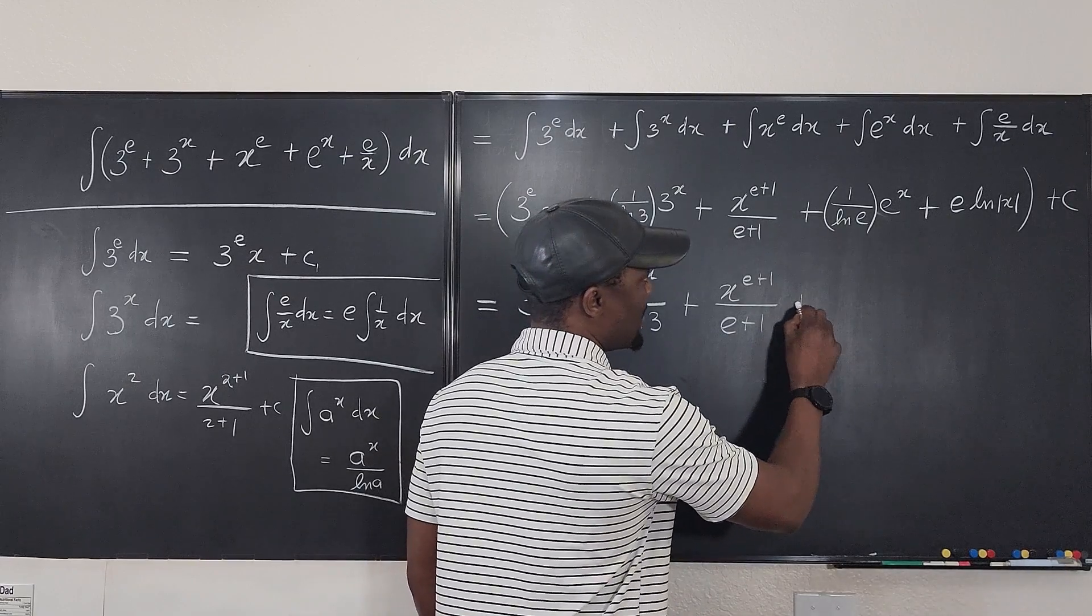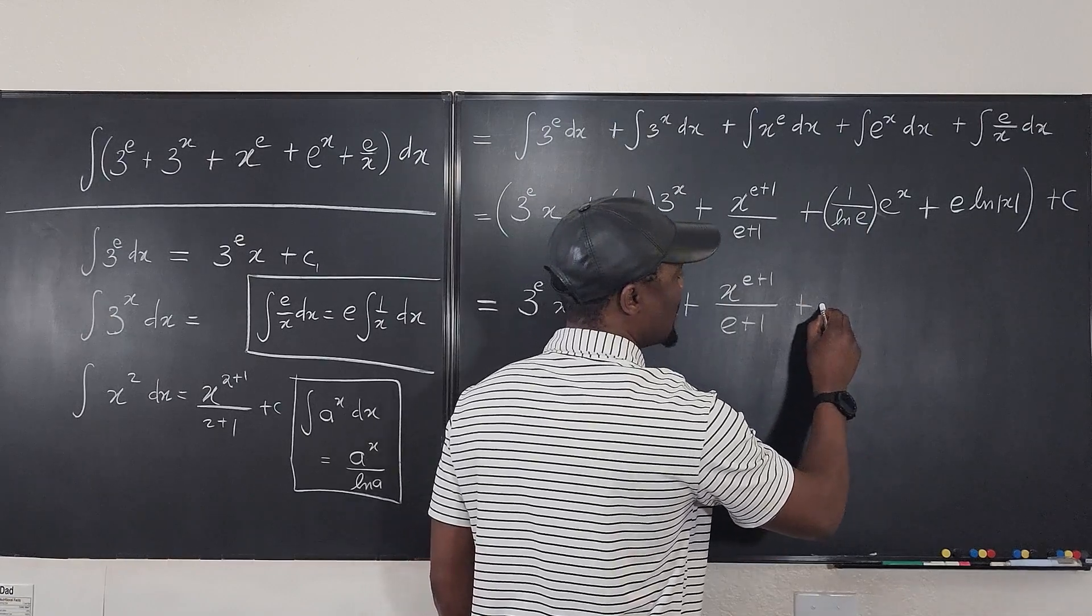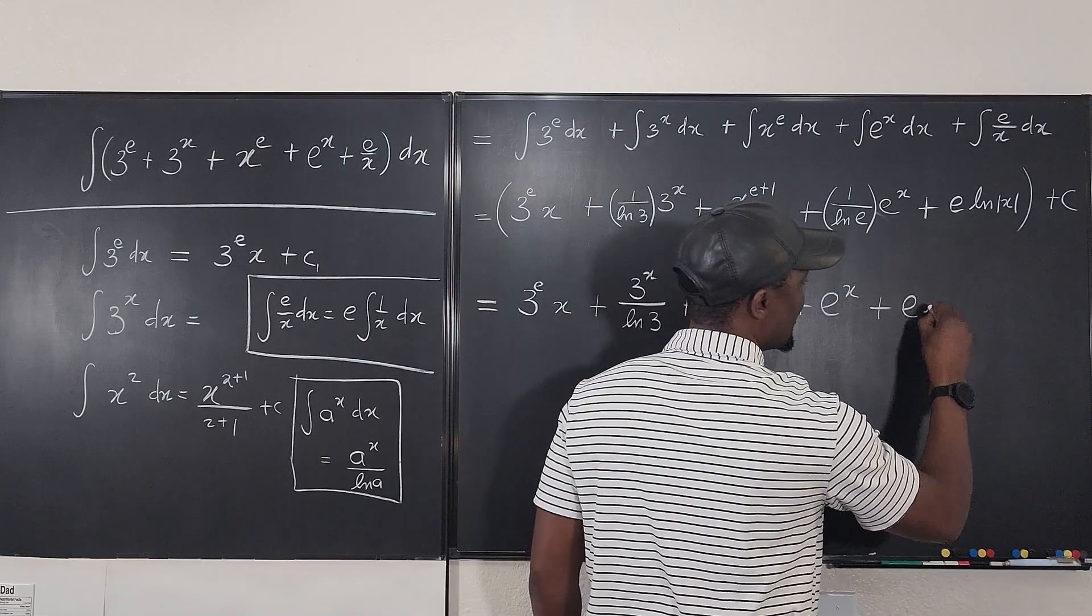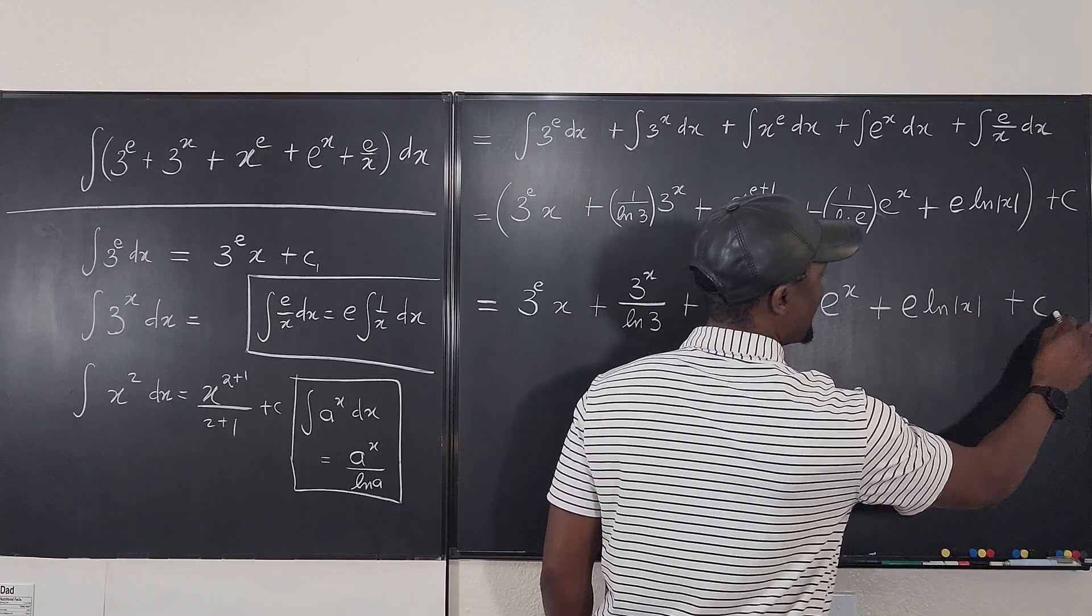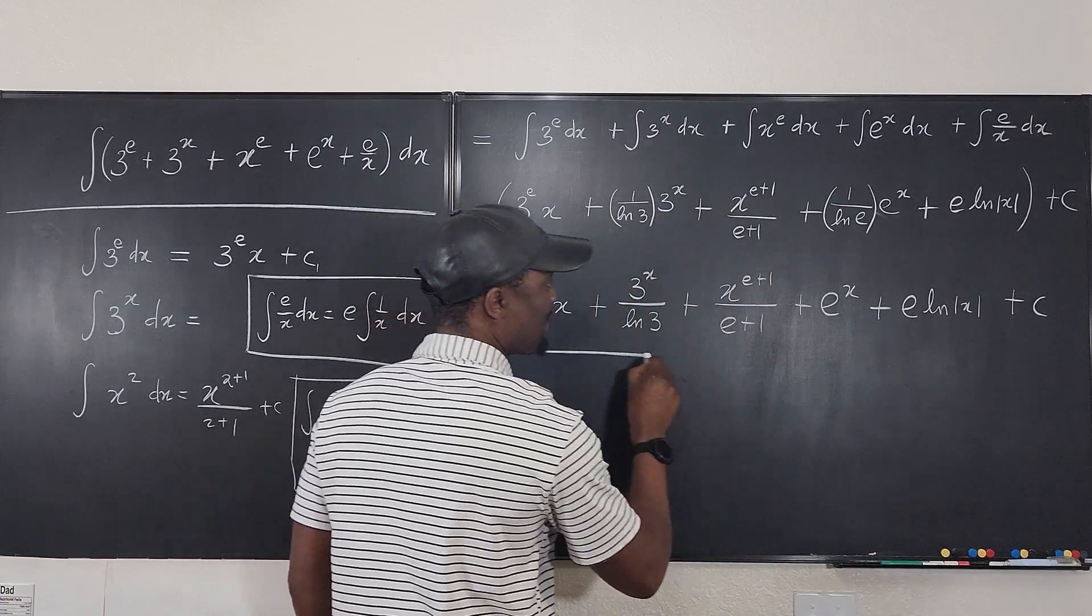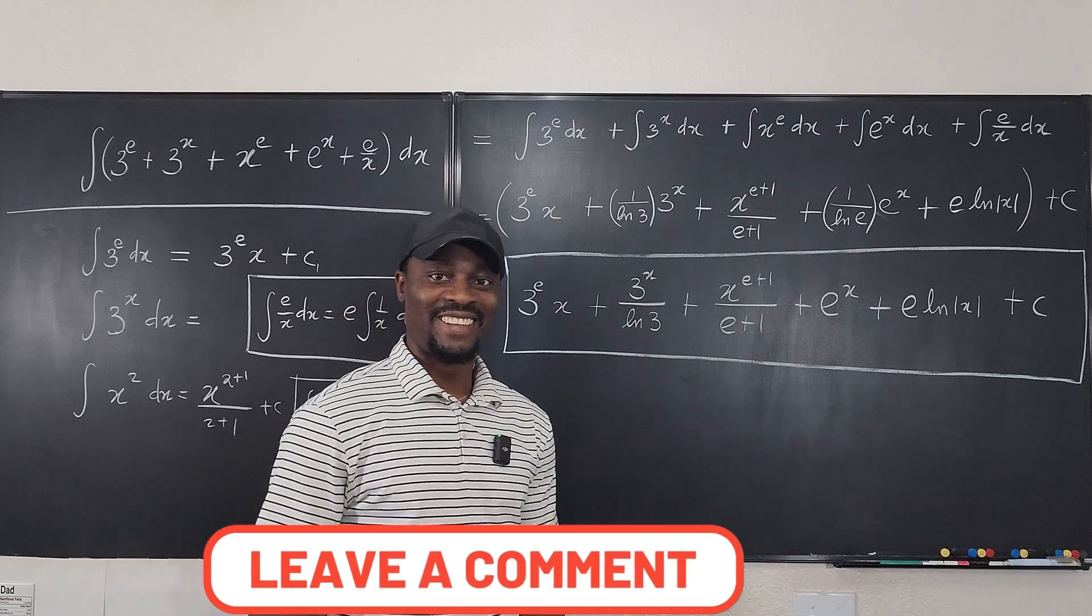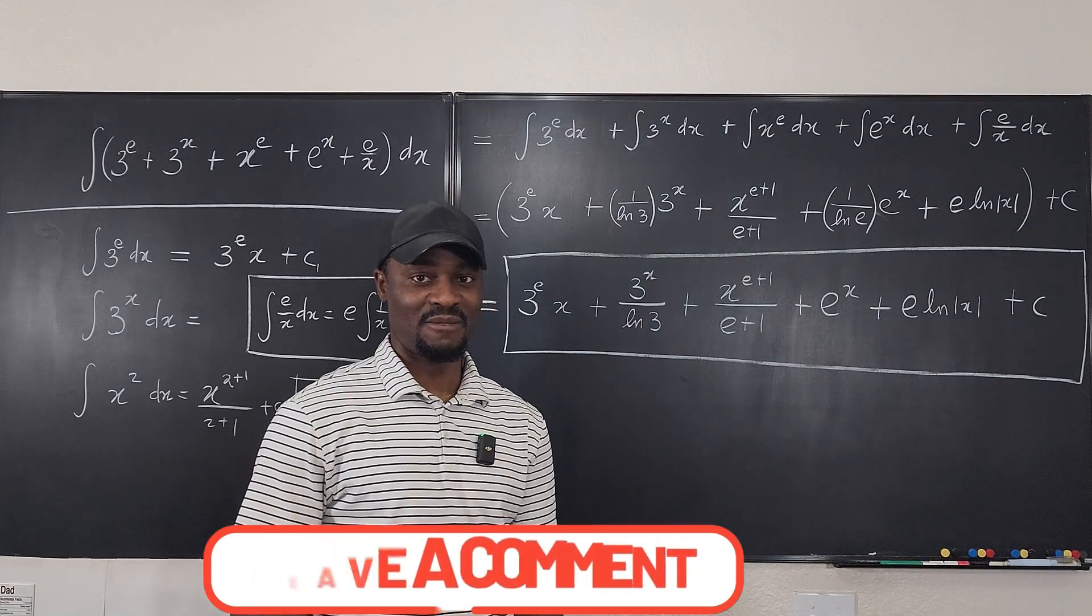And if I go here, the natural log of e is 1. So it's this 1 over 1, which is just e to the x. And the last one is e ln x. And plus c. Never stop learning. Those who stop learning have stopped living. Bye-bye.